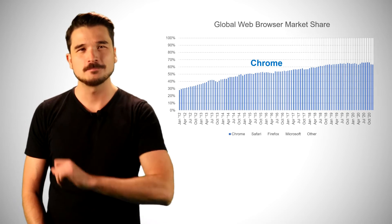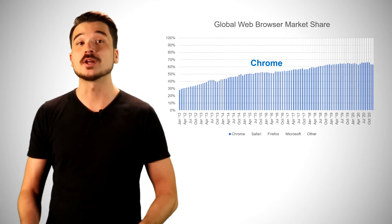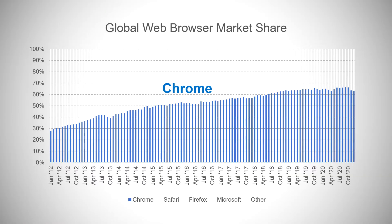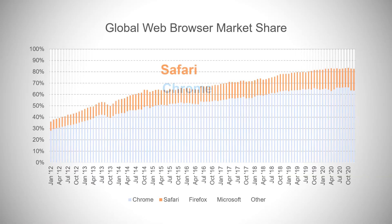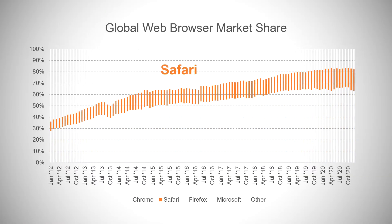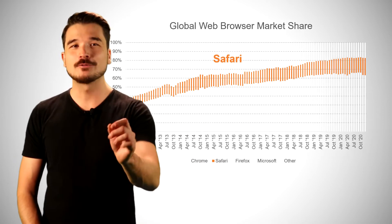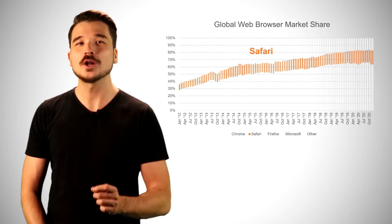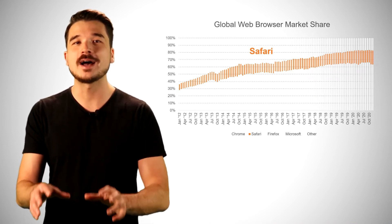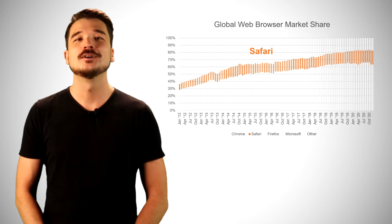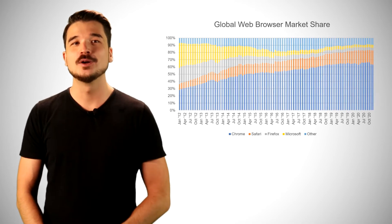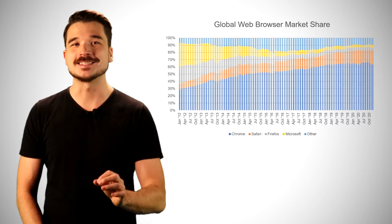However, imagine that we're presenting to an audience of iPhone iOS developers. They might be much more interested in the market share of Apple's Safari browser, especially on mobile devices. Our role as data storytellers is to determine what insights will best serve our audience's needs. Once we've established what our audience needs to know, we want to convey our insights succinctly.